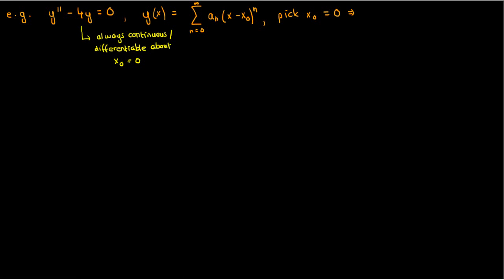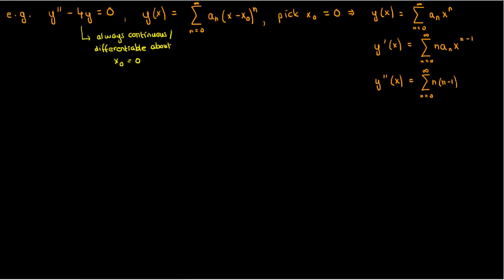If we pick x₀ equals 0, our power series solution becomes y(x) equals the sum from n equals 0 to infinity of a_n times x^n. The first derivative is the sum of a_n times n times x^(n−1), and the second derivative is the sum of a_n times n(n−1) times x^(n−2). Here's what we get if we substitute this into our ODE.